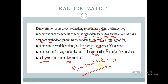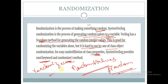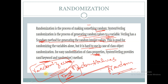In Verilog we generate random values using the keyword $random, whereas SystemVerilog provides a method called randomize for generating random values. In order to generate a random value, the variable should be of type rand. The rand keyword is used to make a variable of random data type, and using the method randomize we will get random values.